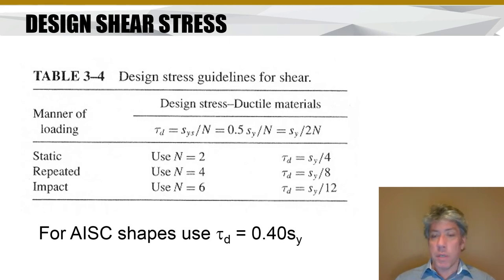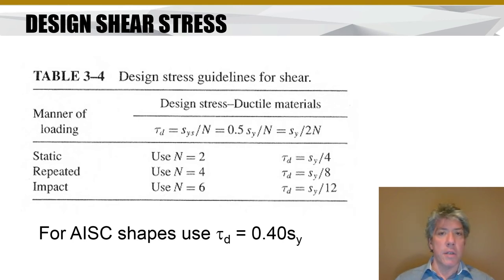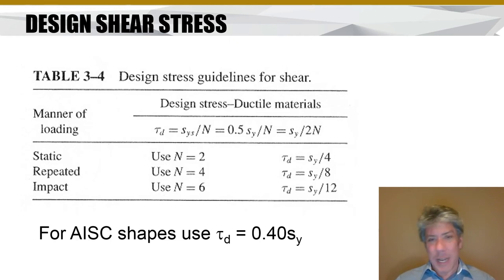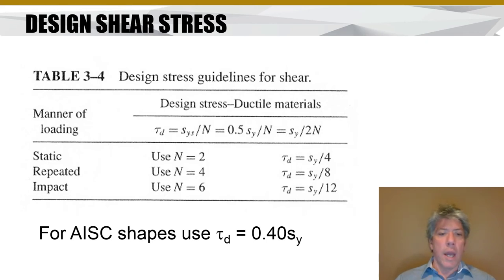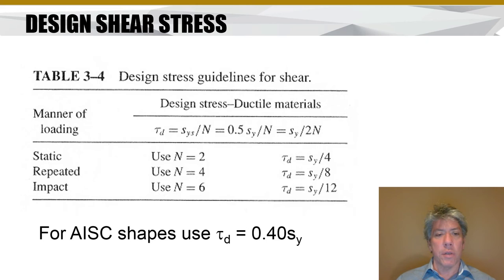How much shear should a material be subjected to? There is a table in your book — table 3-4 — that shows the design stress guidelines for shear. These are the shear stresses we typically use for materials. If we're using a standard steel shape like an I-beam, T-shape, or angle bracket, we should use a design stress of about 40% of the yield strength — that's the AISC recommendation.